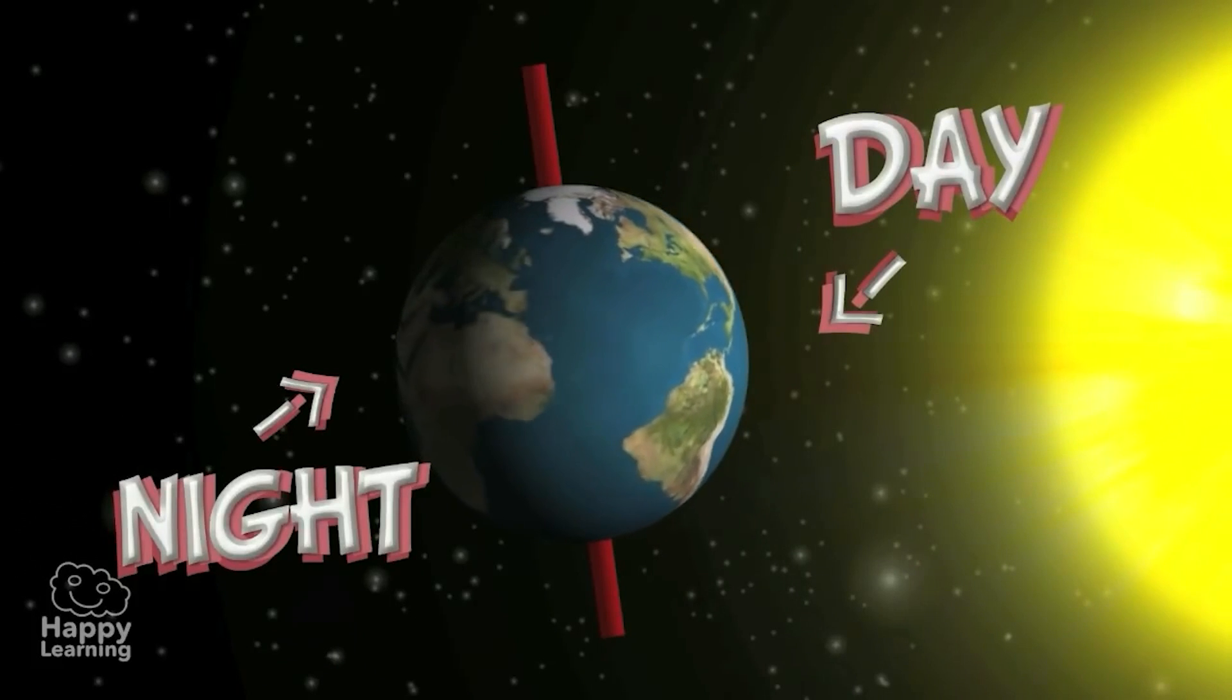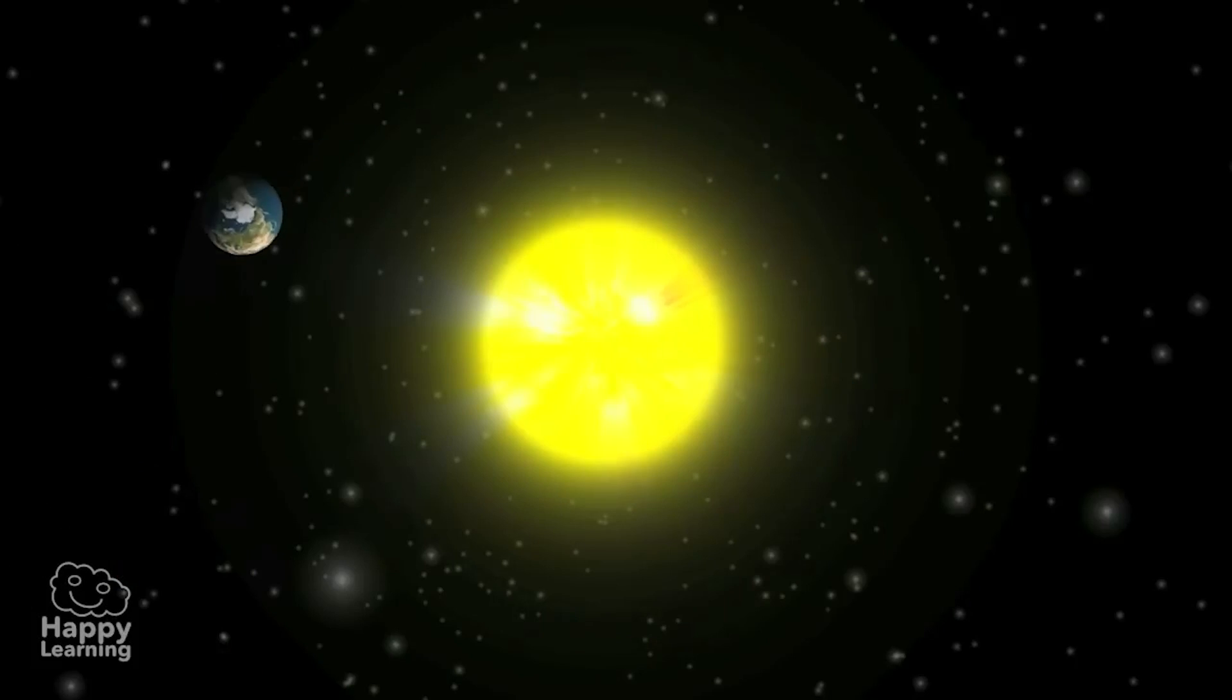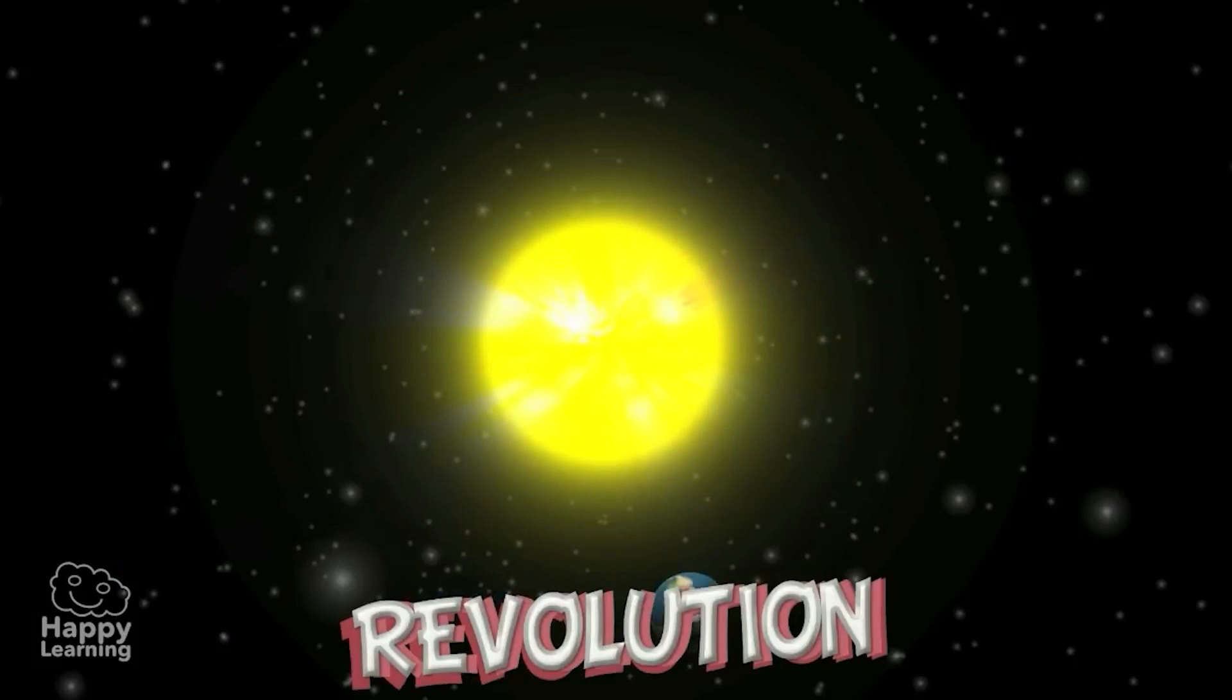Interesting, right? Now let's see the movement of revolution. As you can see in the pictures, the Earth goes around the Sun in an elliptical orbit.